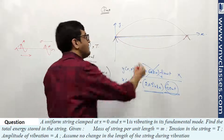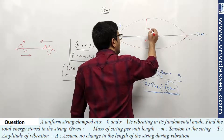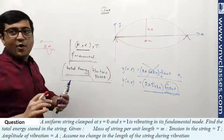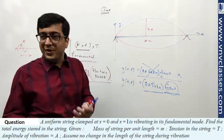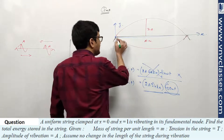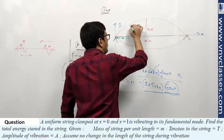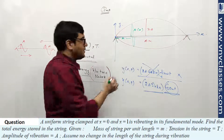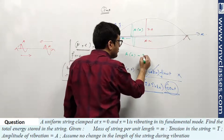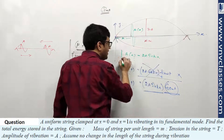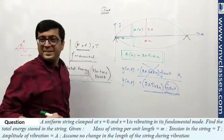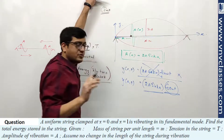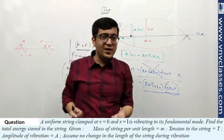The antinode point has amplitude 2a. Now I need total energy between two nodes. Every point is doing SHM. The point at distance x from origin is also doing SHM. Its amplitude as a function of x will be 2a sin(kx). Take a small element dx at position x — it is doing SHM, so it has kinetic and potential energy.